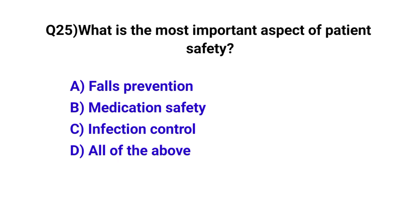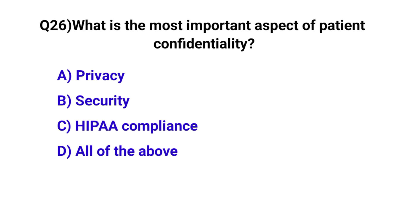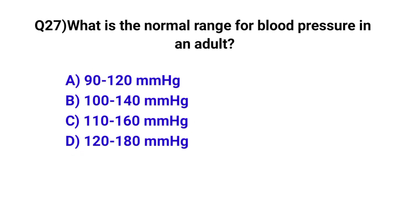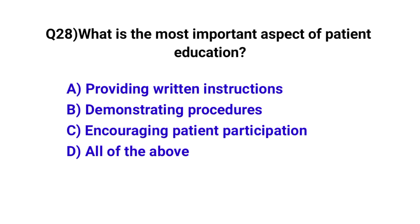Question number twenty-five: what is the most important aspect of patient safety? The correct option is D, all of the above. Question number twenty-six: what is the most important aspect of patient care competency? The correct option is D, all of the above. Question number twenty-seven: what is the normal range for blood pressure in adults? The correct option is A, 90 to 120 mmHg.